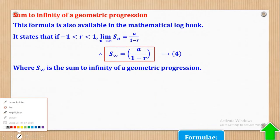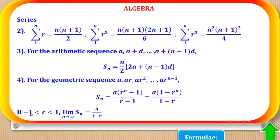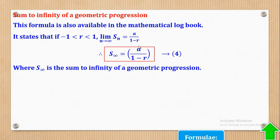Another important term is sum to infinity. This formula is also in the mathematical logbook: if -1 < R < 1, then the sum as N tends to infinity is S∞ = A/(1 - R). This is called sum to infinity, used when the value of R is less than 1. If you have forgotten it, refer to your mathematical logbook.